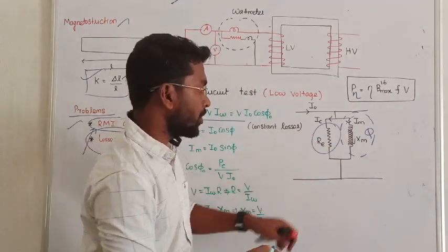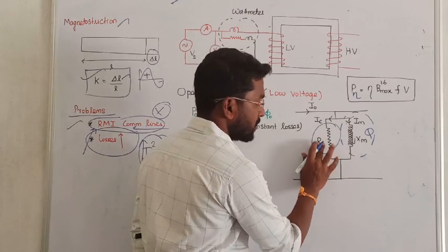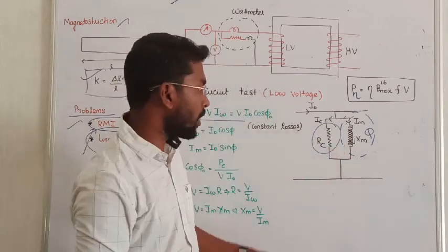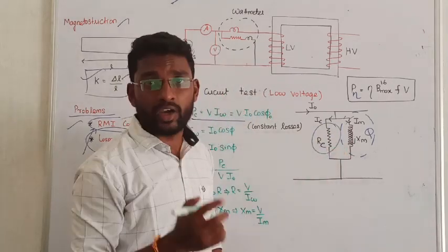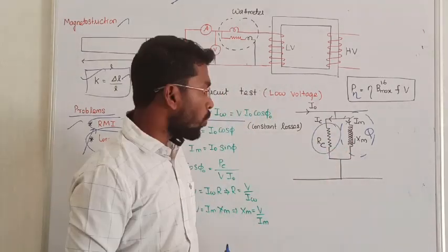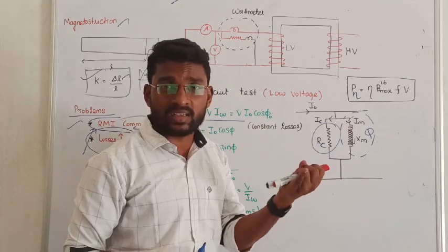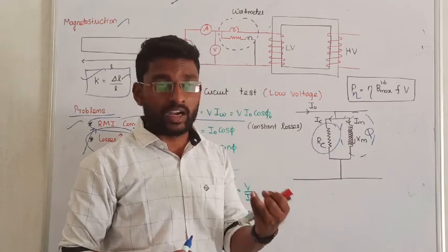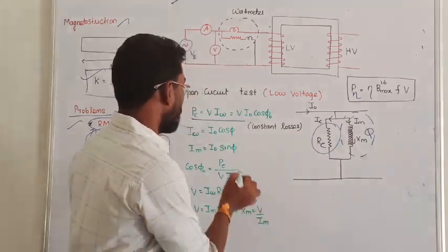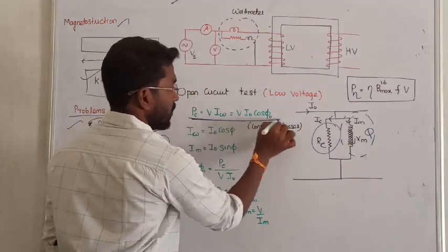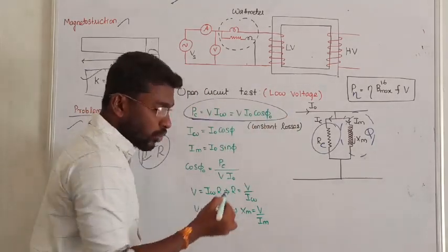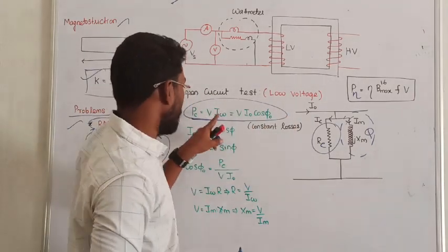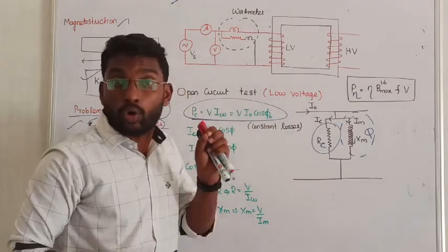This is called the core resistance, and we have two losses under it: one is called hysteresis loss and another one is called eddy current loss. Together these make up the core loss in the transformer. So the open circuit test is used to find the core loss — that is the first purpose.